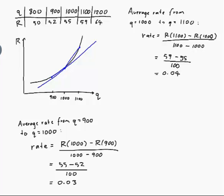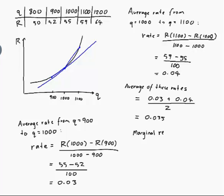So the average of these two rates... The average of these rates is 0.03 plus 0.04 all divided by 2, which comes to 0.035. So, that's my estimate.